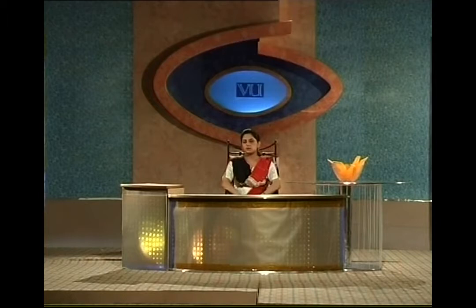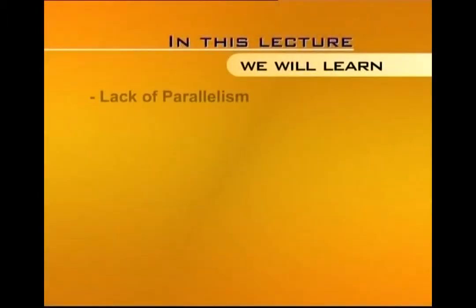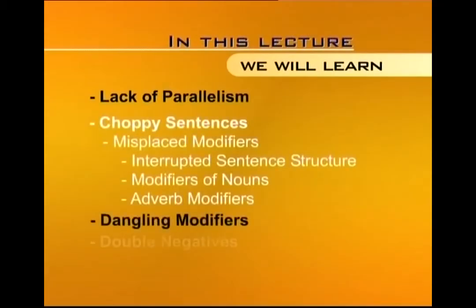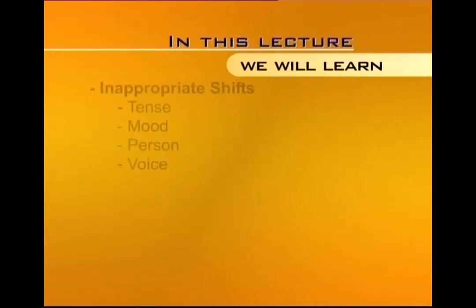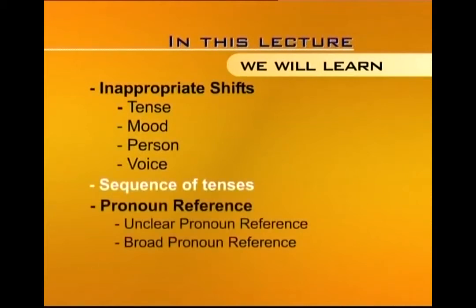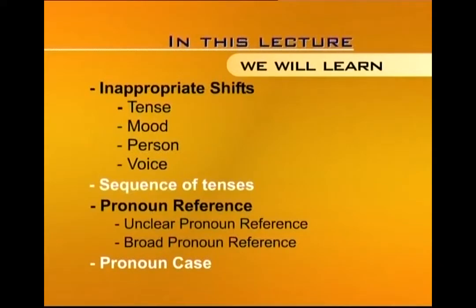We are going to look at sentence problems caused due to lack of parallelism, problems because of choppy sentences, misplaced modifiers and how they can interrupt sentence structure. We will look at modifiers of nouns and adverb modifiers, dangling modifiers, double negatives, and inappropriate shifts within sentences — in tense, mood, person, or voice. We will learn about the correct use of sequence of tenses and pronoun reference, including unclear pronoun reference, broad pronoun reference, and pronoun case.